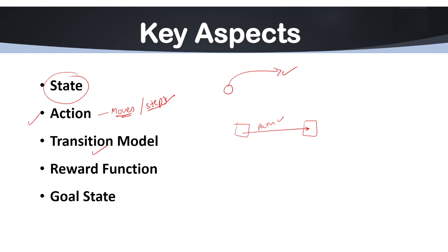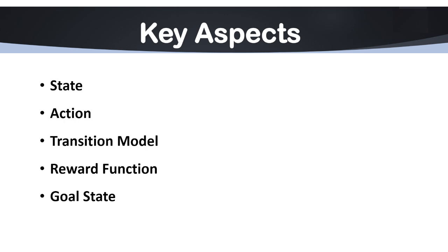Next we have the transition model. The transition model defines how actions transform one state into another. It is essentially a function that maps a given state and action to a resulting state — in other words, it describes the transformation of an action from one state to another.